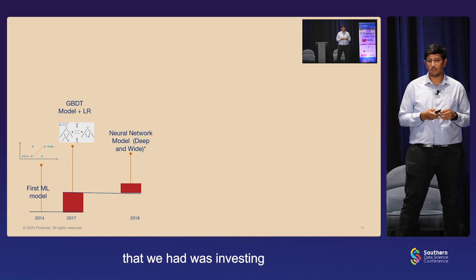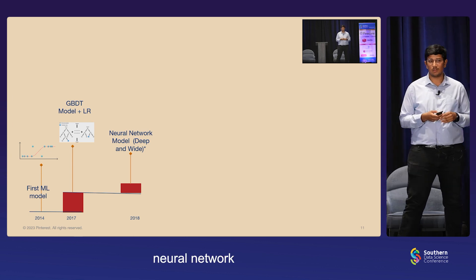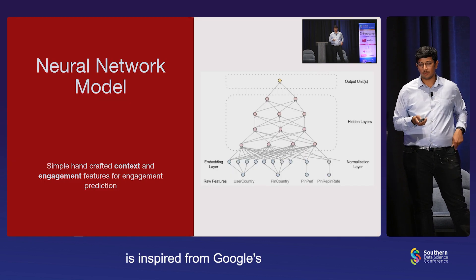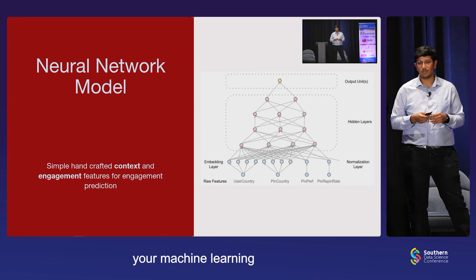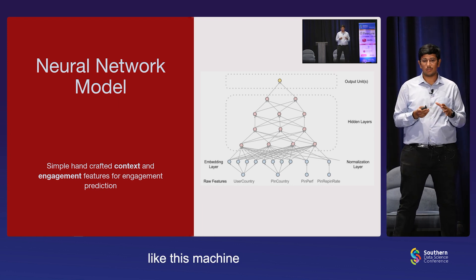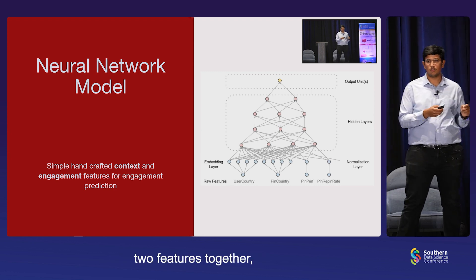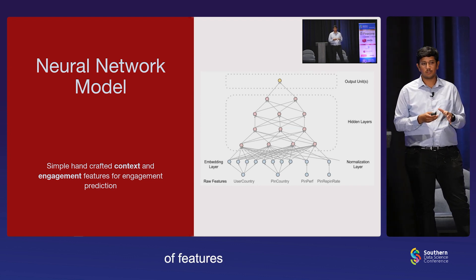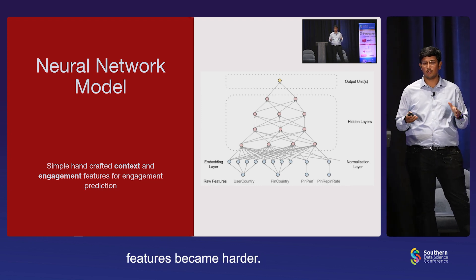The next advancement was investing in replacing the nonlinear transformation coming from GBDTs, but utilizing neural network-based approaches. These are simple neural network-based approaches, and this approach is inspired from Google's seminal work in this field. So instead of the GBDT nonlinear transformations, we now utilize MLP-based layers to learn these nonlinearities. Till this point, these machine learning architectures were relying on heavy hand-crafting of feature engineering — if you want to learn two features together, you define that in your feature logic. This kind of hand-crafting of features became harder as the feature space kept on scaling higher.